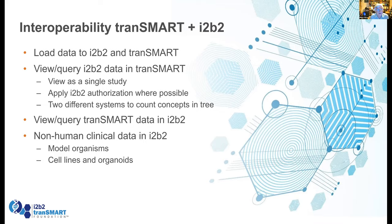The other issue is: can we view TransMart data in I2B2? It's going to be stored by study, so you find the demographics — sex, age, race, etc. — for subjects in the study, for each study with a separate concept, which is a different way of looking at things. Also, a lot of TransMart data is non-human — we have model organisms, cell lines, and organoids. So we need to figure out if that's really going to look right in I2B2. We can explore the data and see how it looks and what's useful.